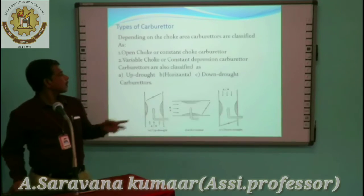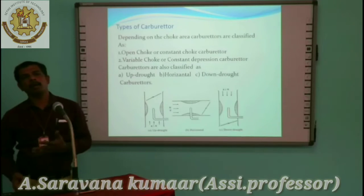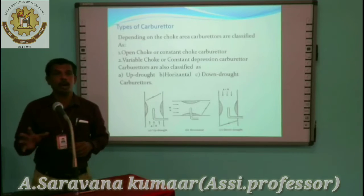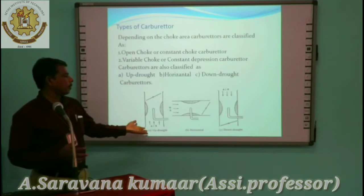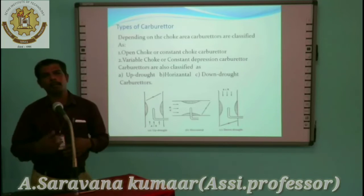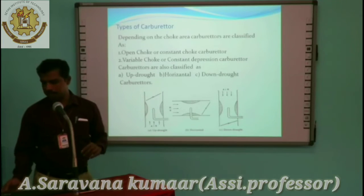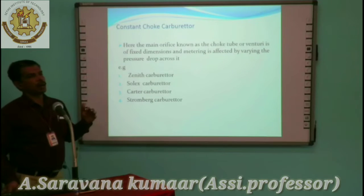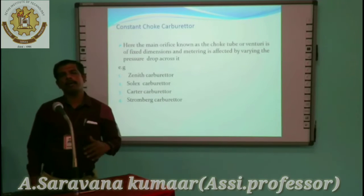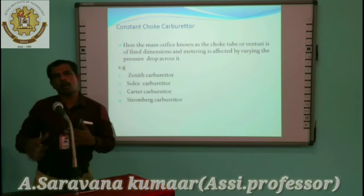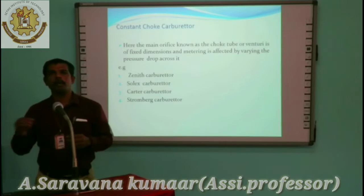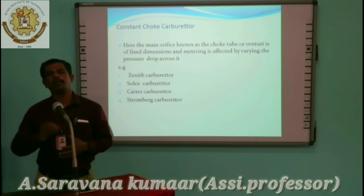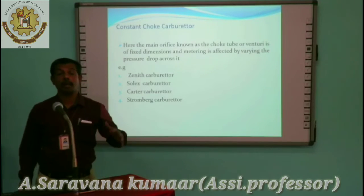Here are the types of carburetors. Not only the simple carburetor, but also updraft, horizontal, and downdraft types, where the jet level and venturi level change. A constant choke carburetor is a modification of the simple carburetor to meet all requirements. Many arrangements are made in the simple carburetor to make it very effective for all types of situations and loads.